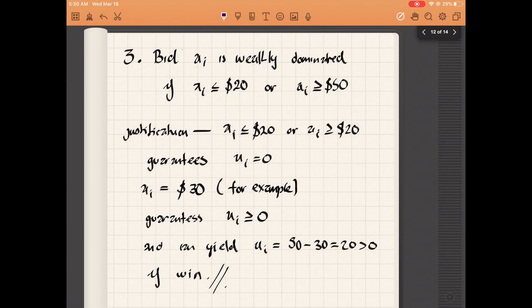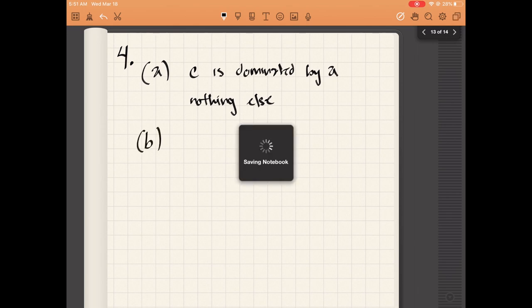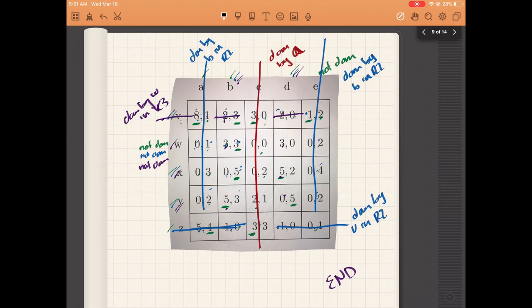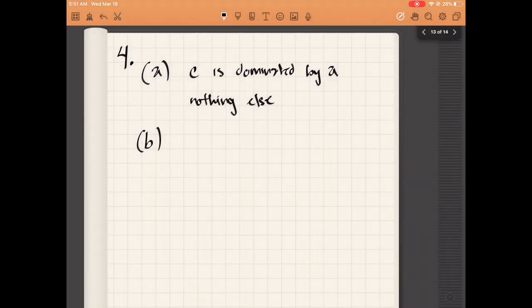The only action dominated in the first round was d, which was dominated by a—that's the answer to part a. For part b, the actions that survived till the very end are w, x, and y for player one, and b and d for player two.